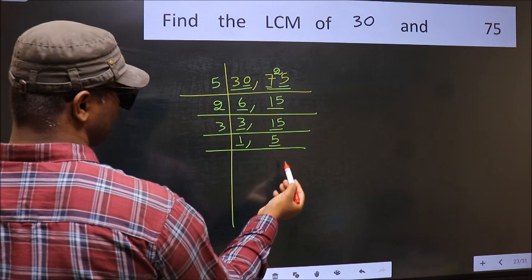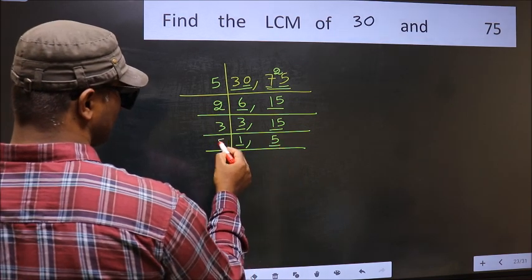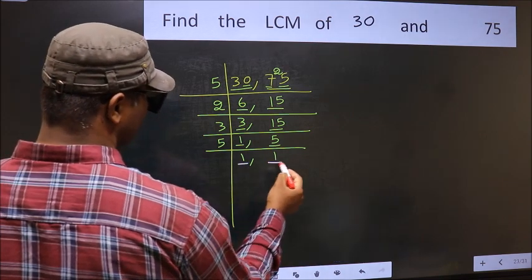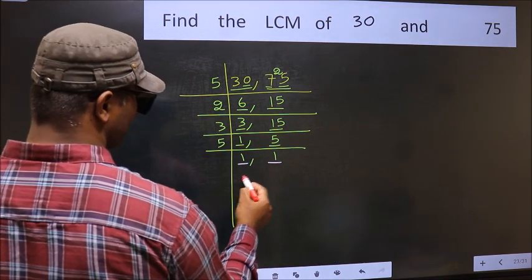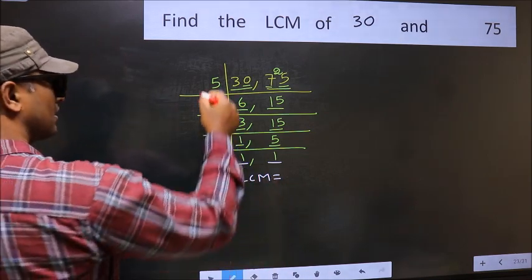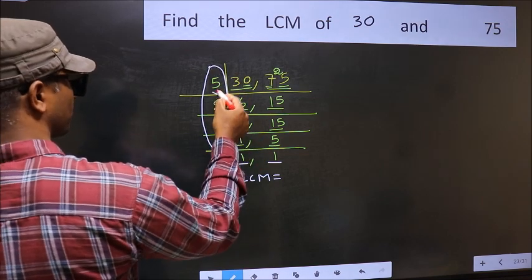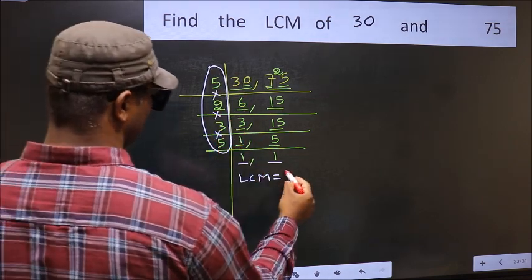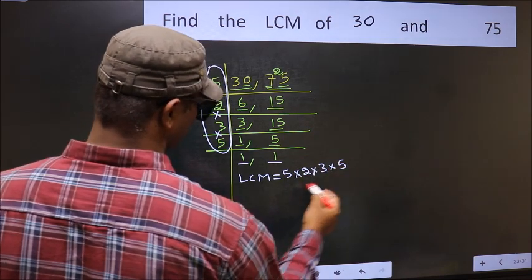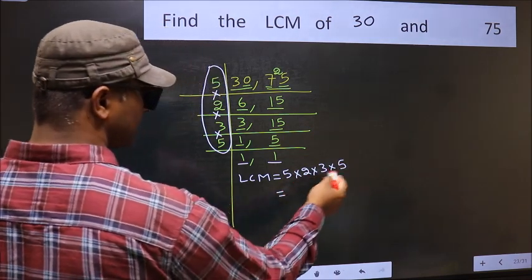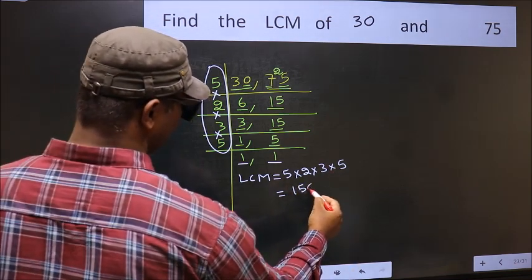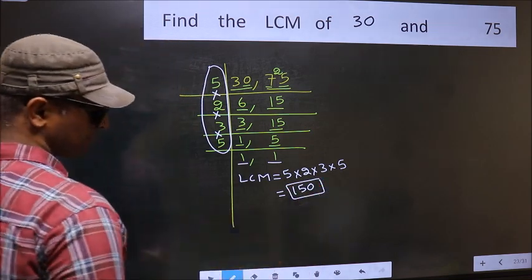So focus on the next number 5. 5 is a prime number, so 5 divided by 5 is 1. We got 1 in both places. Our LCM is the product of these numbers. That is 5 times 2 times 3 times 5. When we multiply these numbers, we get 150. That is our LCM.